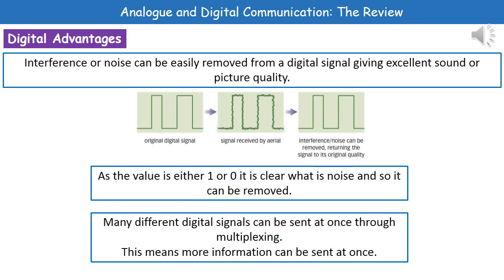When thinking about the relative advantages of these different signals, one big advantage of using digital — and you've probably noticed over the past few years that lots of things are going digital — is that interference or noise can be easily removed from a digital signal, which gives us excellent sound or picture quality. You can see the original digital signal on the left of the diagram, and the signal received by an aerial could have some interference or noise present within it.